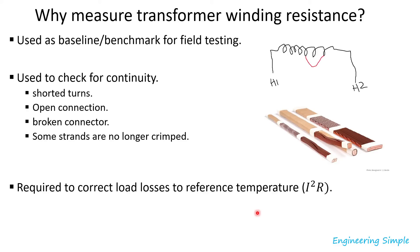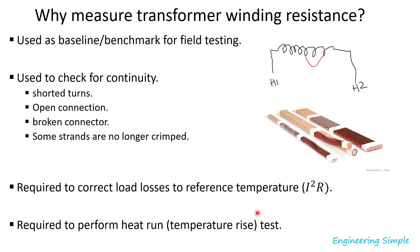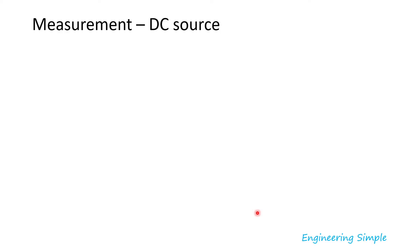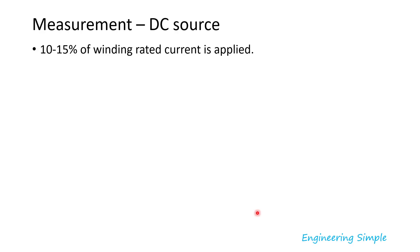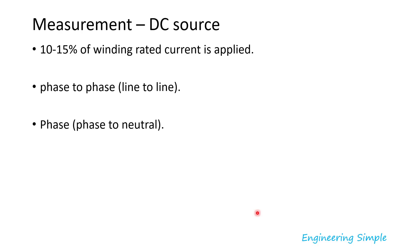Winding resistance is also required to perform a heat run, also known as a temperature rise test. For the measurement, a DC source is used. Typically 10 to 15 percent of the winding rated current is applied, because applying too much current could cause overheating or core saturation. You can measure phase-to-phase, also known as line-to-line winding resistance — some call it terminal-to-terminal or bushing-to-bushing; they all mean the same thing.